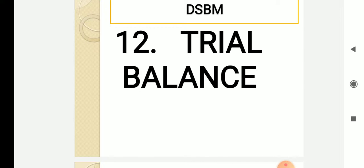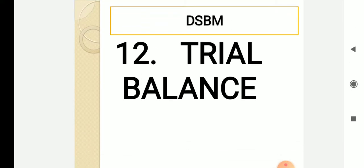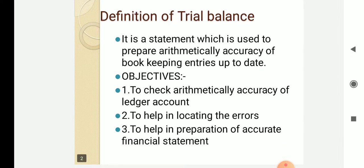In this chapter, we are going to learn how transactions are recorded accurately, one by one, arithmetically. Trial balance is a statement which is used to prepare arithmetically accurate bookkeeping entries up to date. With the help of trial balance, we can find out whether there are errors in recording of transactions or not.